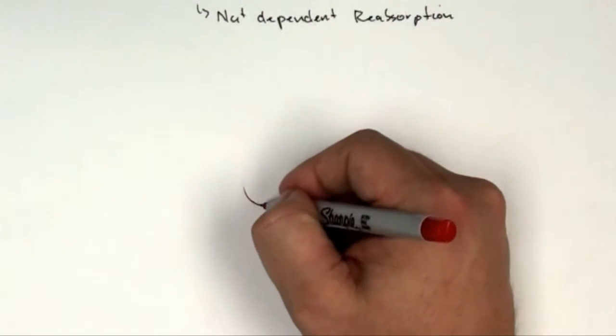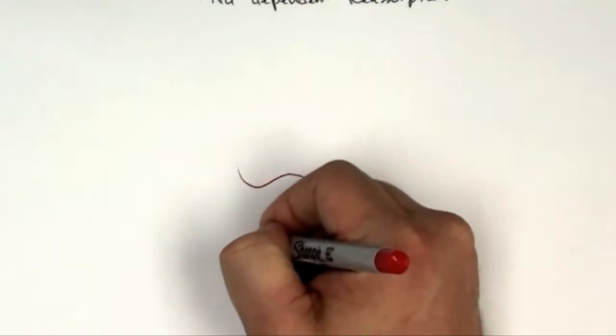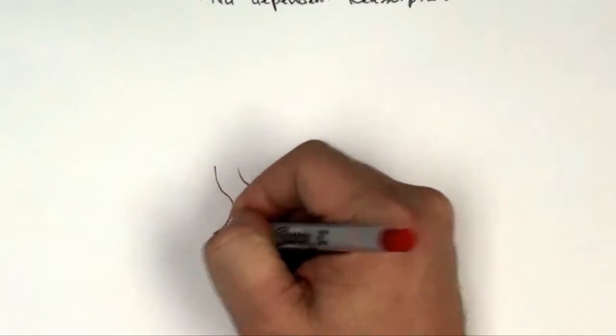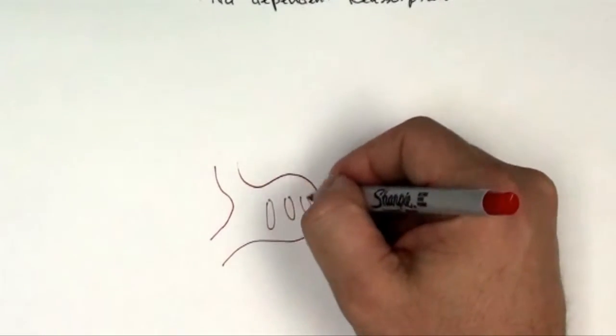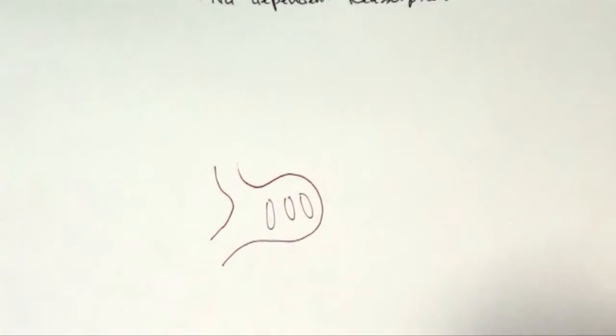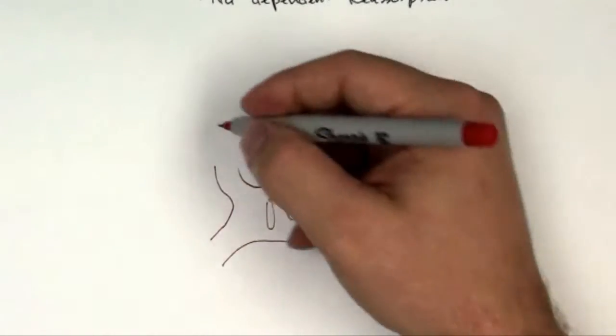So I'm going to start right in the middle and draw something called the glomerulus. And the glomerulus is a tuft of capillaries. They bring in blood to be filtered in something called the nephron in the kidney. Now you've got about a million of these per kidney.